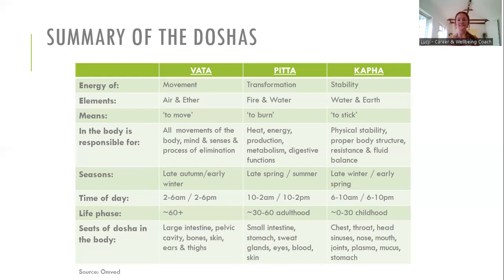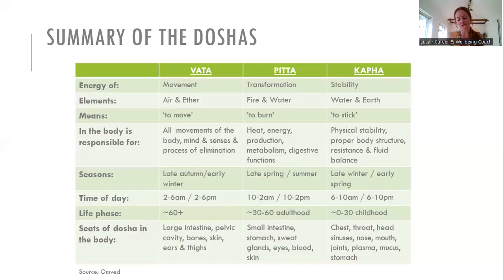Kapha is the energy of stability, made up of water and earth — it means 'to stick' and is that building block of the body, responsible for physical stability and body structure. It's associated with late winter and early spring, the 6–10am and 6–10pm times of day, the early childhood life phase, and it sits in the chest, throat, sinuses, nose, joints, and stomach. That's an overview of the Doshas and hopefully a good introduction to Ayurveda — there's so much more I could say, but I wanted to keep it focused and explain how the Doshas are affected not just by food and lifestyle, but also by the seasons, time of day, and life stage.